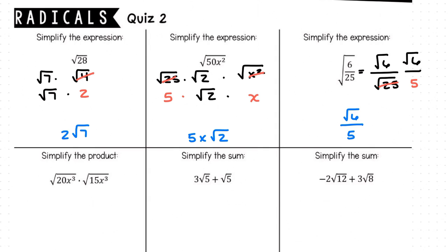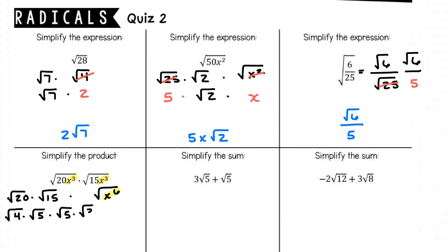Along the bottom, we need to simplify the product. Let's start by organizing all of our numerical factors, followed by our variables. Since we have 3 factors of x, followed by 3 factors of x, all together we have 6 factors of x. Neither 20 nor 15 are perfect squares, so we'll write them as their factors: the square root of 4 times the square root of 5, times the square root of 5, times the square root of 3.